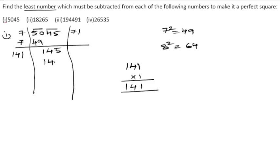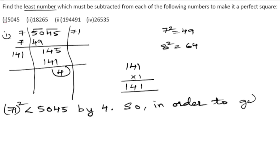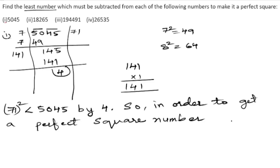141, and the remainder is 4. So 71 squared is 5041, which is less than 5045 by 4. Therefore, in order to get a perfect square number, we need to subtract 4 from 5045.